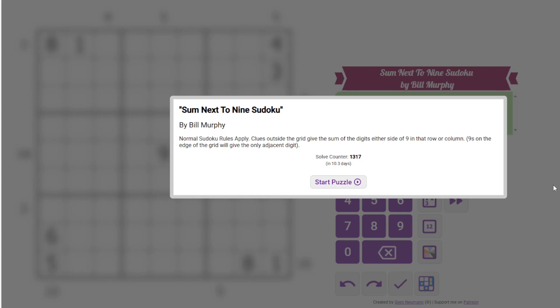Hi everyone, this is the Gas Walkthrough for February 19th. I'm Philip Newman. Today I'm solving Sum Next to 9 Sudoku by Bill Murphy.